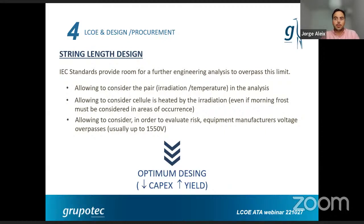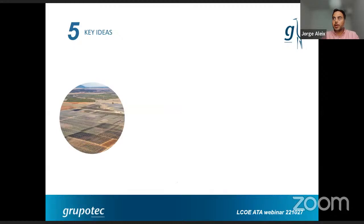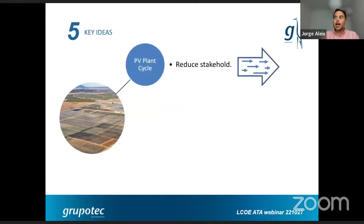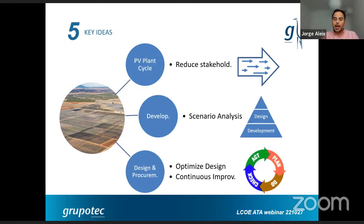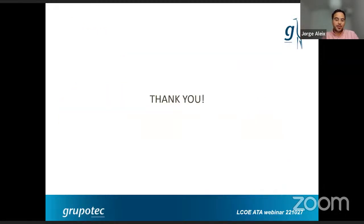With this analysis we can optimize CAPEX by getting the optimum string length, and increase yield by having strings operate at higher voltages — where most inverters have higher performance and cable losses are reduced. To summarize: consider the overall lifecycle in the LCOE; reduce stakeholders so everyone is aligned; take the development phase very seriously because the earlier you address it the more you can improve LCOE; and focus on design and procurement with continuous improvement of design and equipment selection.